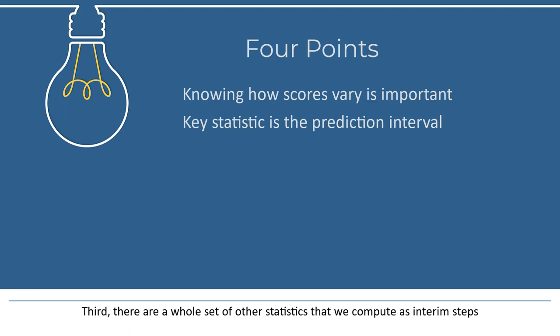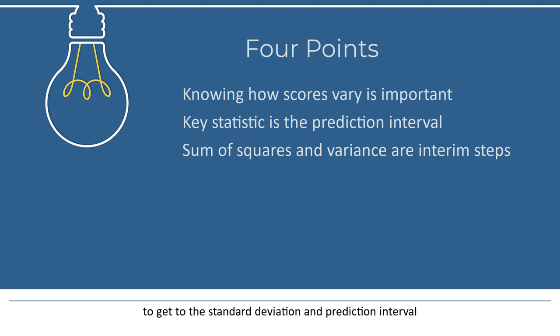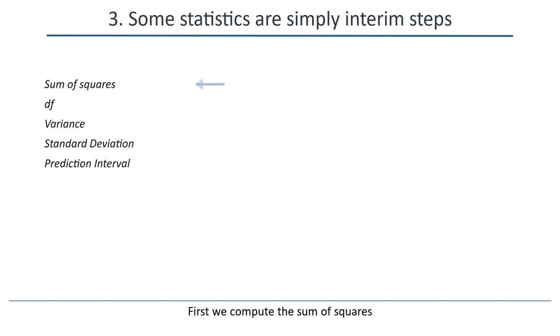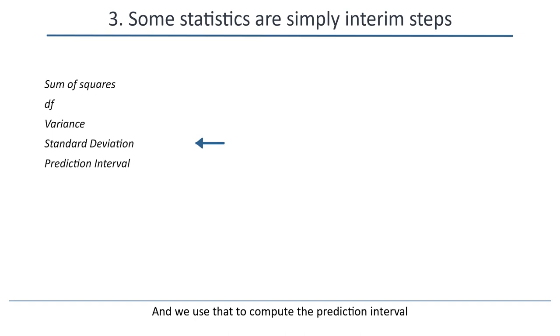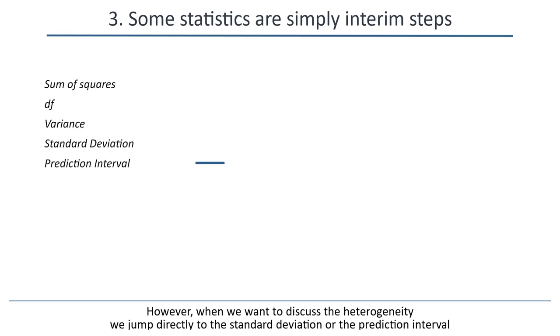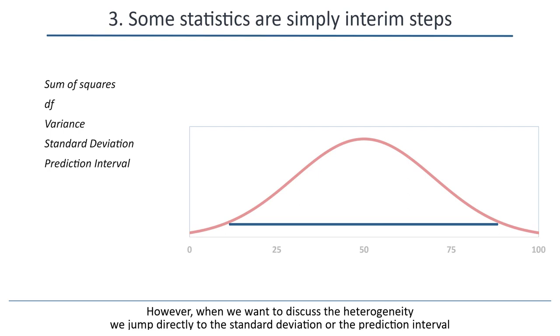Third, there are a whole set of other statistics that we compute as interim steps to get to the standard deviation and prediction interval. First, we compute the sum of squares and the degrees of freedom. We divide one by the other to get the variance. The square root of the variance gives us the standard deviation, and we use that to compute the prediction interval. However, when we want to discuss the heterogeneity, we jump directly to the standard deviation or the prediction interval. We understand that the other numbers are simply interim steps in the computation.